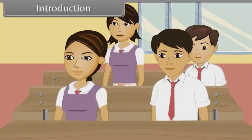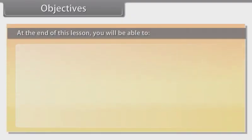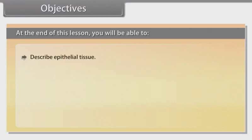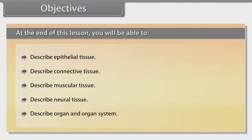Sir, are the organs in the human body also made of tissues? Yes, Naina. In this lesson you will learn animal tissues and the organs. At the end of this lesson, you will be able to describe epithelial tissue, connective tissue, muscular tissue, neural tissue, and organ and organ system.